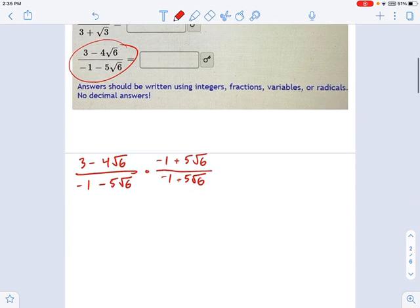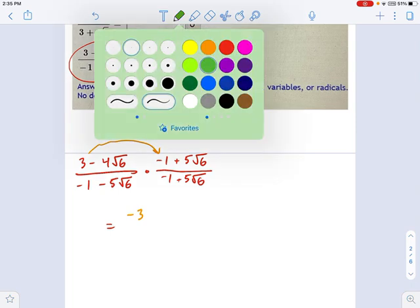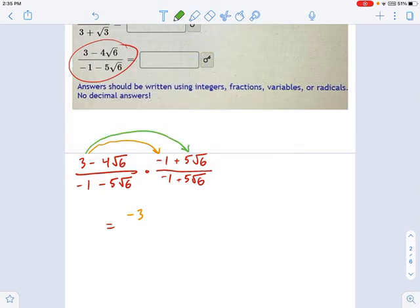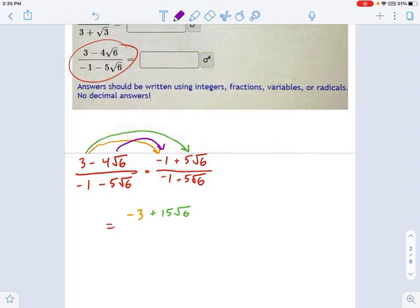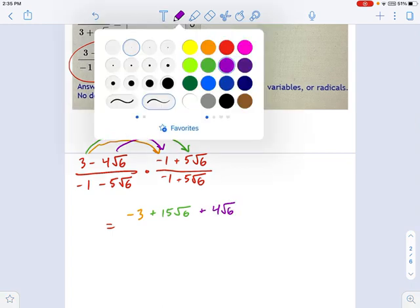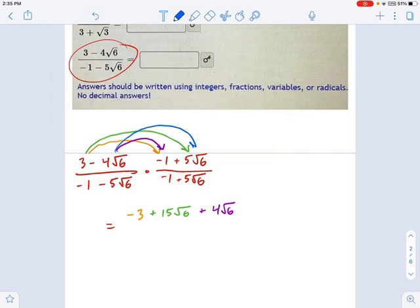And now, what do we get? I need a little space here. We'll go in order. 3 times negative 1 is going to be negative 3. And 3 times 5 radical 6 is going to be 15 radical 6. Then we have negative 4 radical 6 times negative 1, so that'll be positive 4 radical 6. And our last one here will be negative 4 radical 6 times 5 radical 6. That'll be negative 20 radical 6.